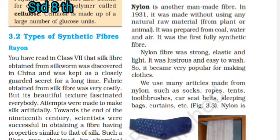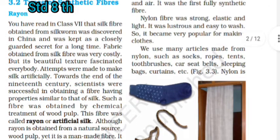Nylon is another man-made fiber — we do not get it naturally. In 1931, it was made without using any natural raw material from plants or animals. It was prepared from coal, water, and air. It was the first fully synthetic fiber. Nylon fiber is strong, elastic, and light.